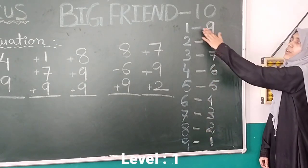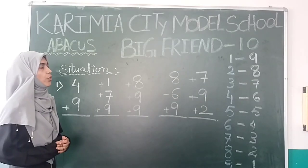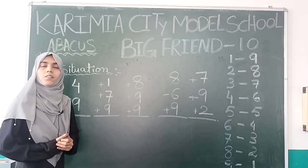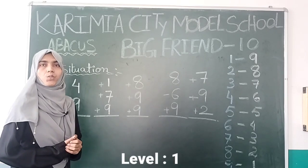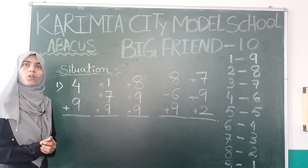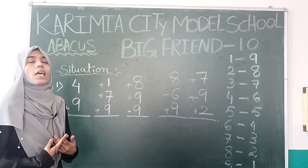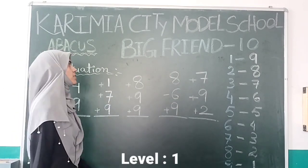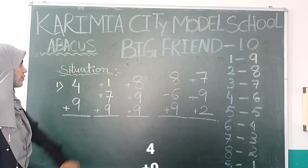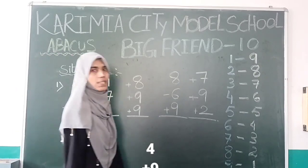If one is friend of nine, nine is friend of one. We will use our Big Friend in situations where direct sums aren't possible. In our previous class we learned direct sums, but some sums need help from this friend. Our first situation is four plus nine.